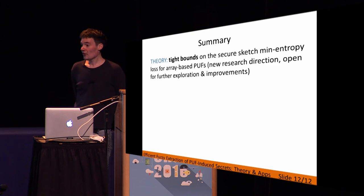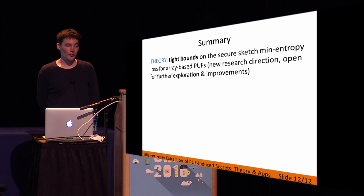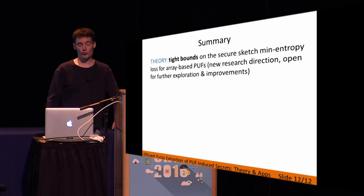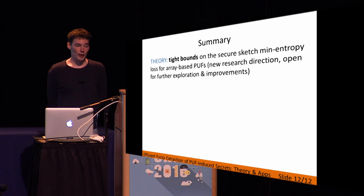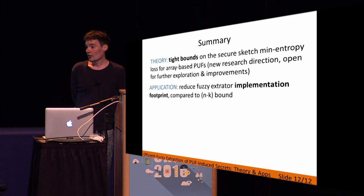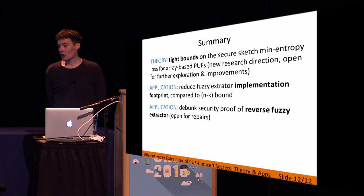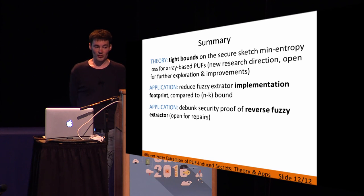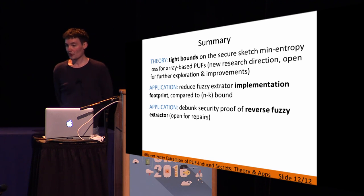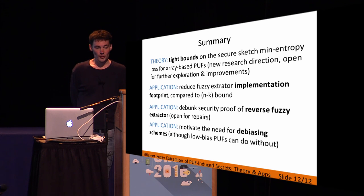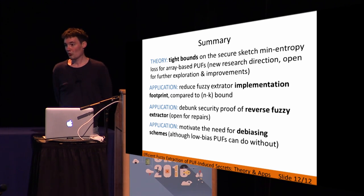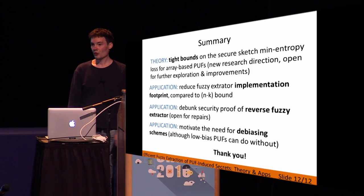In summary: we have a theory part deriving tight bounds on secure sketch min-entropy loss for array-based PUFs — a fairly new research direction open for further exploration. Applications include reducing the implementation footprint of the fuzzy extractor compared to the N-K bound, showing a flaw in the reverse fuzzy extractor security proof that is open for repairs, and motivating the need for debiasing schemes — although low-bias PUFs can do without in principle. Thank you for your attention.